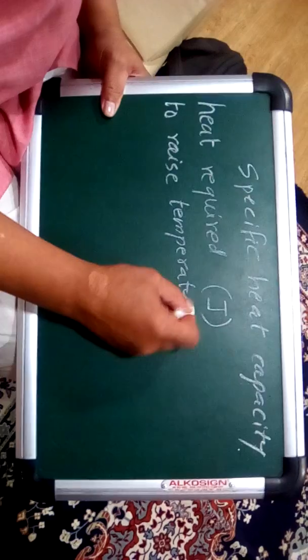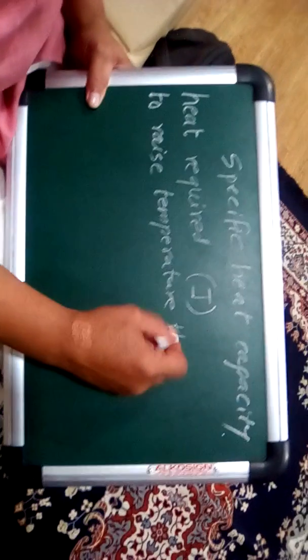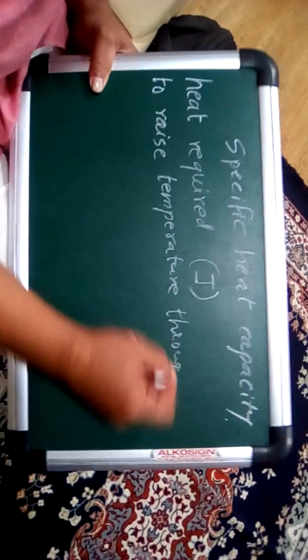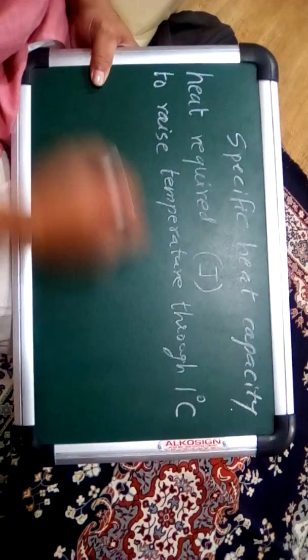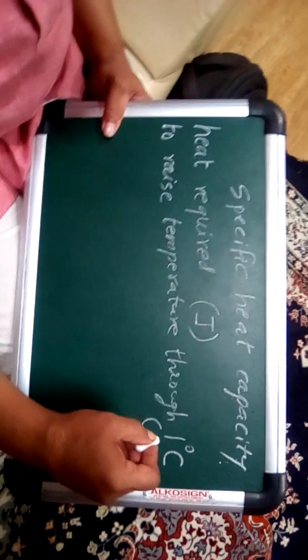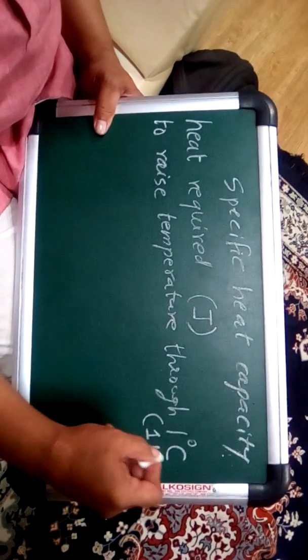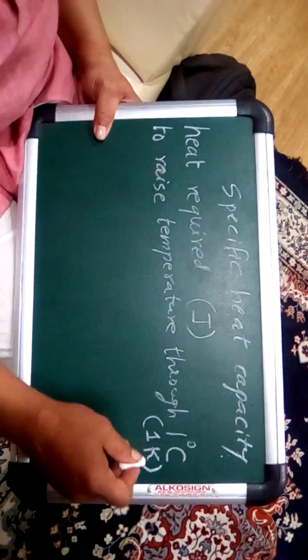The standard unit is degree, actually 1 degree Celsius or 1 Kelvin is the same thing. Kelvin is the SI unit.